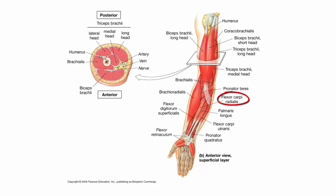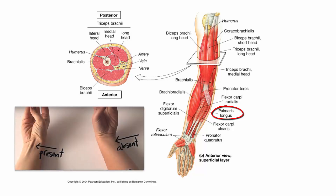The flexor carpi radialis flexes the wrist and radially deviates the wrist. The palmaris longus flexes the wrist, and surprisingly it's missing in about 16% of people. To check if you have one, put your thumb and little finger together — if you see a tendon popping out in the middle of the forearm at the wrist, you have a palmaris longus. If it doesn't appear, it's most likely absent. The palmaris longus is a fairly weak muscle, and if a tendon graft is needed, surgeons will often use it because its removal doesn't affect grip strength.